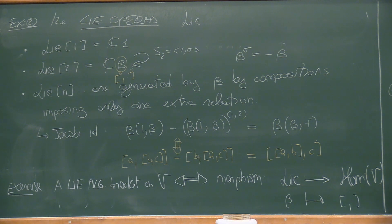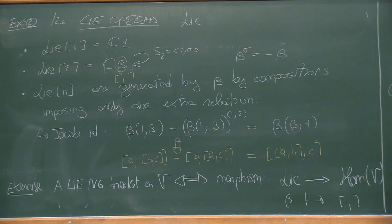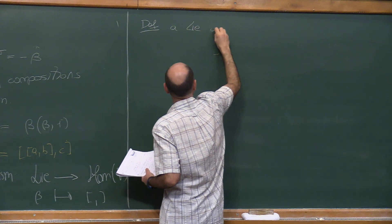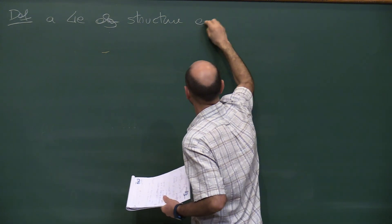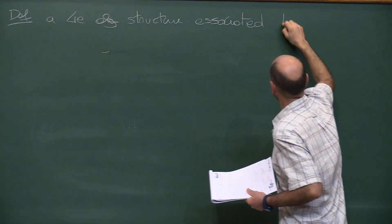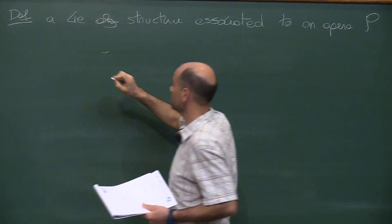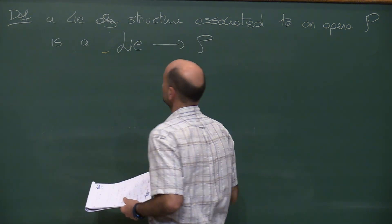This suggests the exercise: a Lie algebra bracket on a vector space V is the same thing as a morphism of operads from the operad Lie to the operad Hom(V), mapping the generator beta of Lie to the Lie bracket on V. In general, we can therefore talk about a Lie algebra structure associated to an operad P, defined as a morphism of operads from Lie to P.